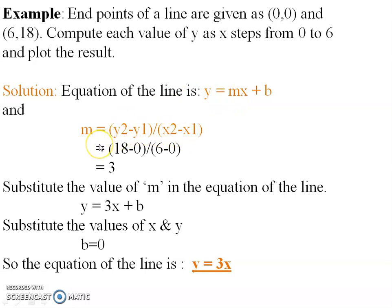Here we are calculating m. x1,y1 is 0,0 and x2,y2 is 6,18. So m = (18-0)/(6-0) which equals 18/6, that is equal to 3. We have got m as 3.